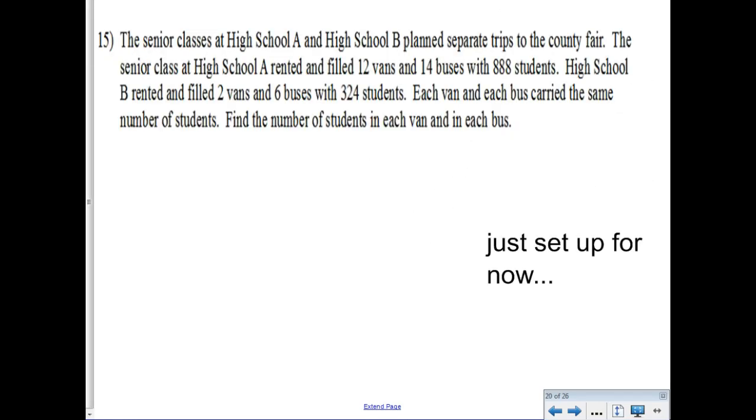So, here, your first task is to determine how many unknown things there are, define variables, and set them up as to what they represent very specifically, and then use those variables to set up equations and then eventually solve. So, we have senior classes of high school A and B are going on a trip to the county fair. High school A rented and filled 12 vans, 14 buses, with 888 students. High school B rented and filled 2 vans, 6 buses, 324 students. Each van and bus carried the same number of students. Find the number of students in each van and each bus. So, my first question is, how many things are unknown to us in this question? How many variables are we going to need to set up? Two.